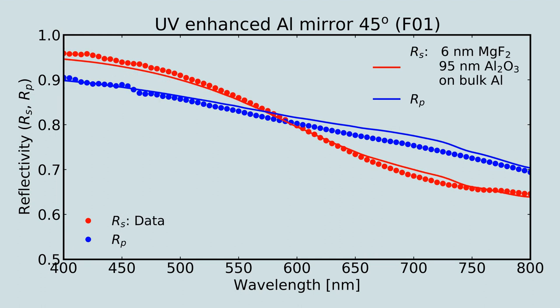One hypothesis is that the aluminum oxidized prior to coating with magnesium fluoride. A model fit including an intermediate layer of aluminum oxide shows good agreement with the data.